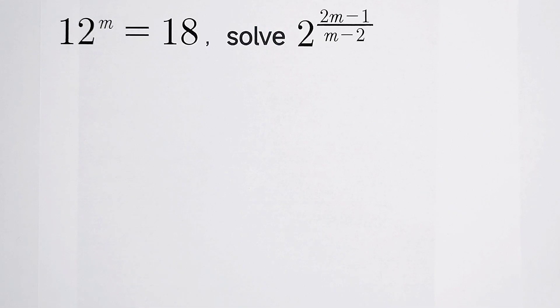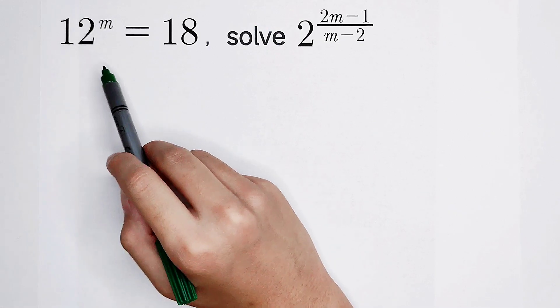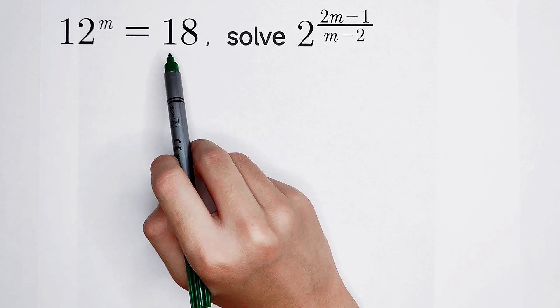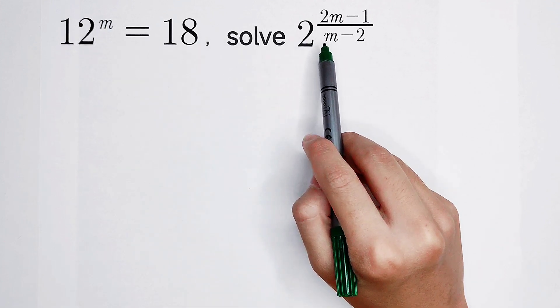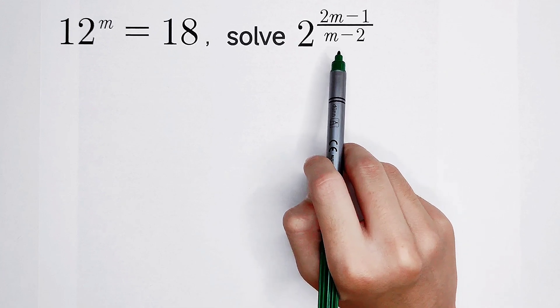Welcome back to Math We Know. We are given that 12 to the power m is equal to 18. So the value of 2 to the power 2m minus 1 over m minus 2. How can you solve it?